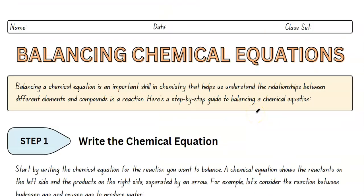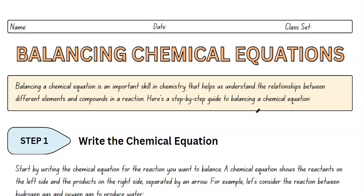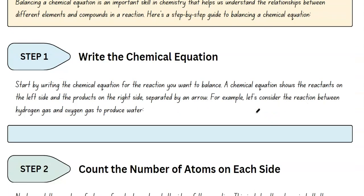You can find and follow along for free inside of the description if you would like a copy of these handouts. So now that we know how to count atoms, we need to know how to balance a chemical equation. It's important to balance because in all chemical equations, mass is conserved. So step one is going to be to first write the chemical equations.